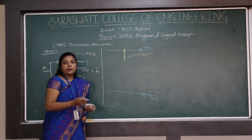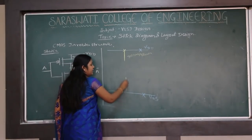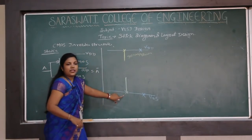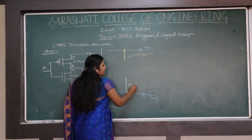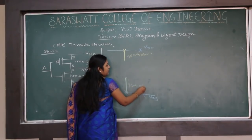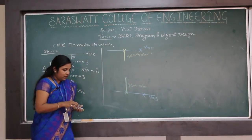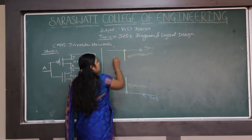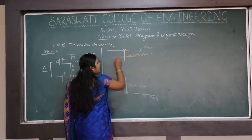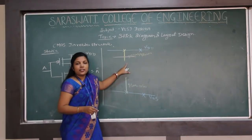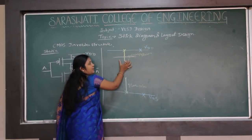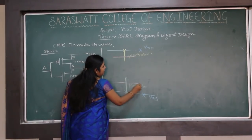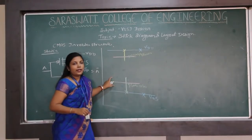For N diffusion, we use green color. The N diffusion stick is connected to VSS. For obtaining the gate, when polysilicon material cuts any diffusion layer, a MOSFET is formed. If polysilicon cuts P-type diffusion, a PMOS is formed; when it cuts N-type diffusion, an NMOS is formed.